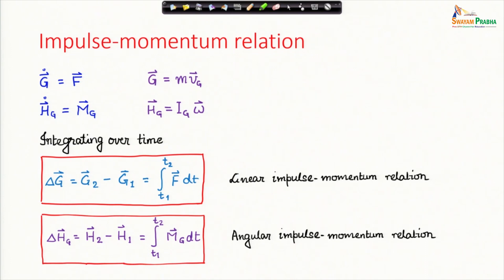If we have angular impulse as 0, there is no moment. Remember Mg can include couple moments. If there are no moments about the center of mass, then the angular momentum about the center of mass is conserved.